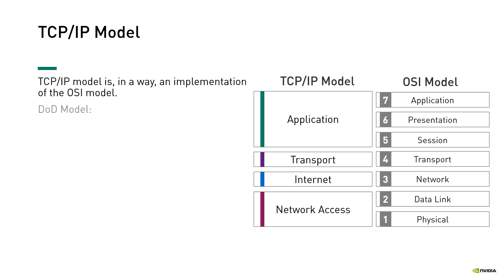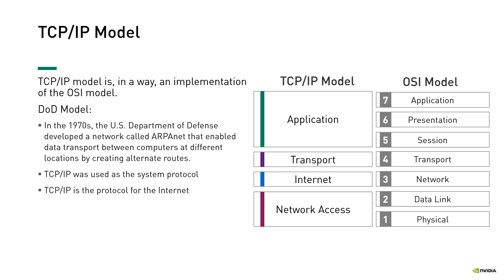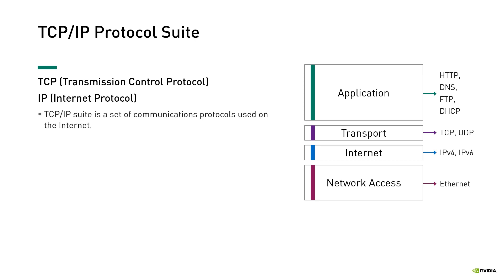In the 1970s, the US Department of Defense developed a network called ARPANET that enables data transport between computers at different locations by creating alternate routes. TCP/IP was used as the system protocol for that network. ARPANET ceased to exist in 1990, but since then TCP/IP has evolved to meet the changing requirements of the Internet. TCP/IP specifically defines how computers should be connected to the Internet and how data can be transmitted between them. The TCP/IP protocol suite is named after two of its main protocols: TCP — Transmission Control Protocol — and IP — Internet Protocol.